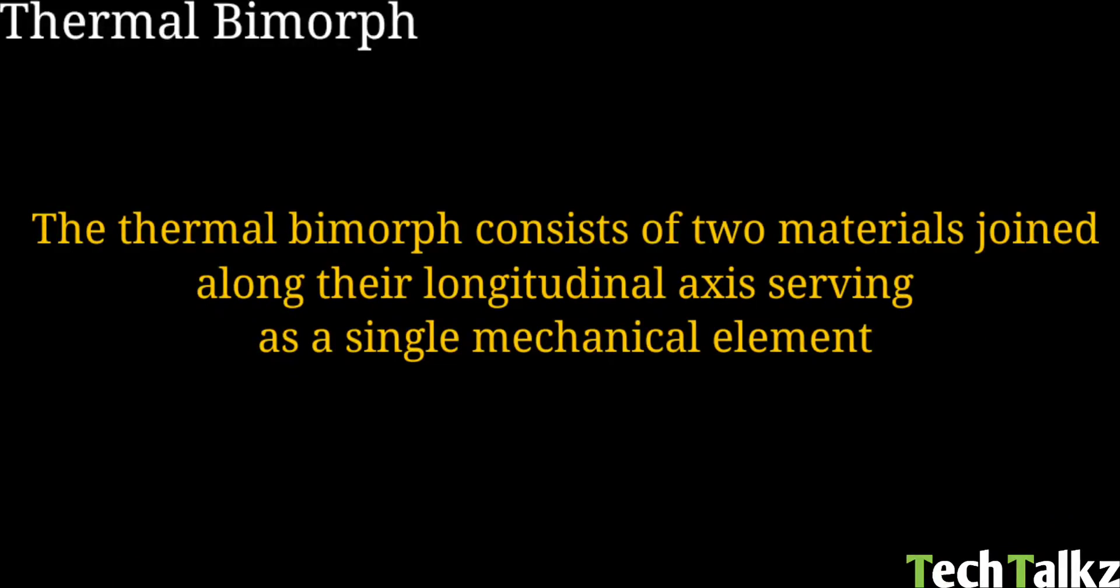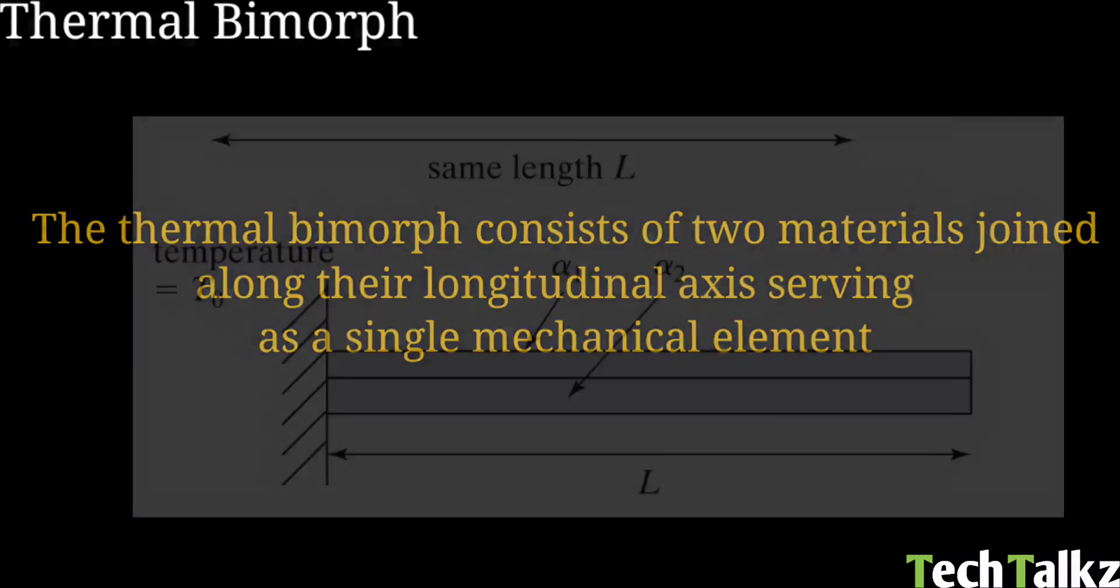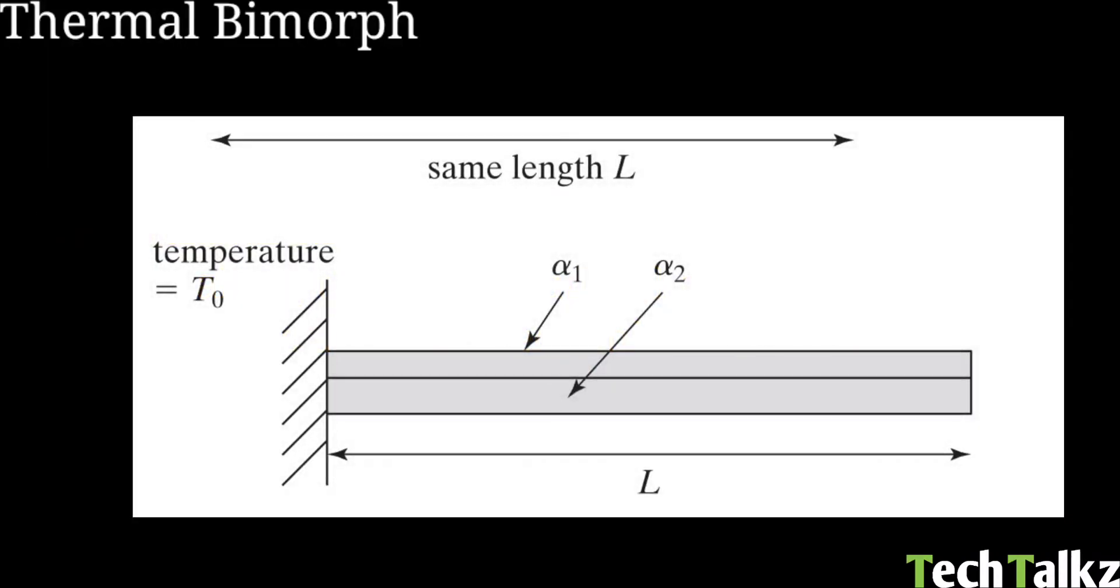Next is thermal bimorph. Thermal bimorph is two different materials joined along their longitudinal axis. The mechanical element will act as an actuating element. This can be used for sensing. The figure shows a bi-metallic cantilever beam. It is a bimorph.